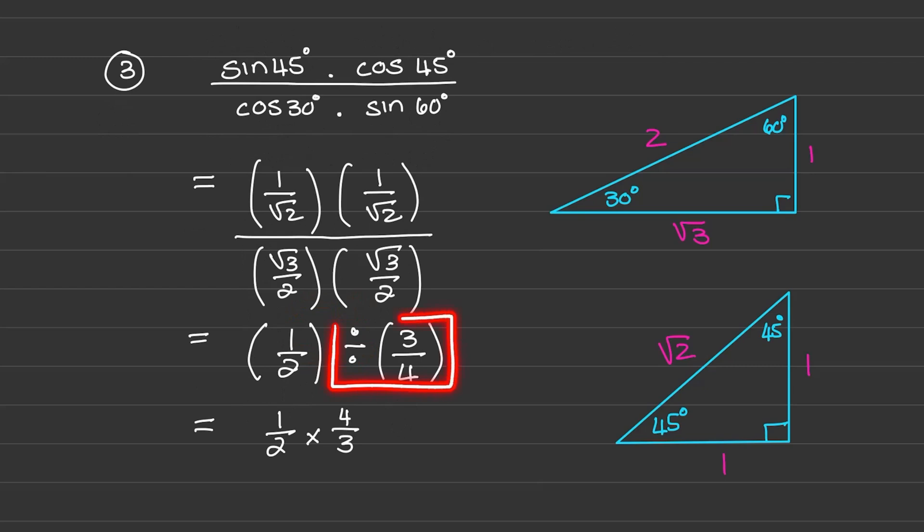And previously you would have learned about flipping and multiplying when we divide fractions of one another. So that will change into multiplying 1 half by 4 over 3. So when I simplify, I have 4 over 6 or 2 over 3.